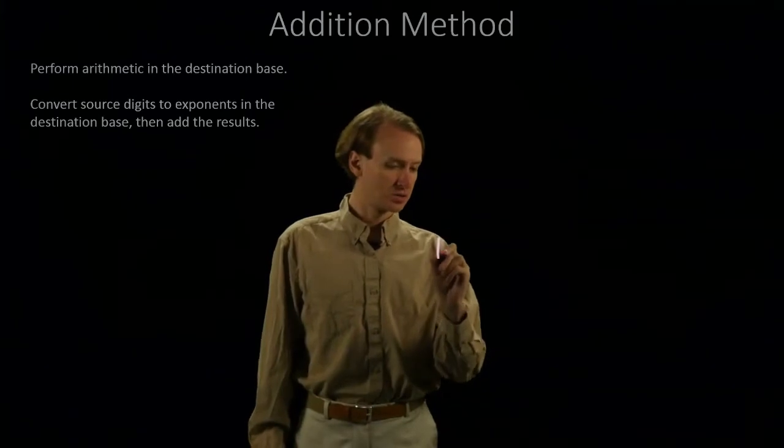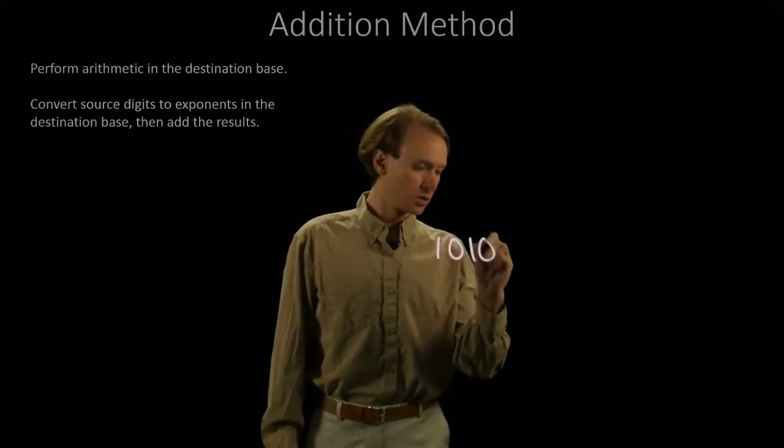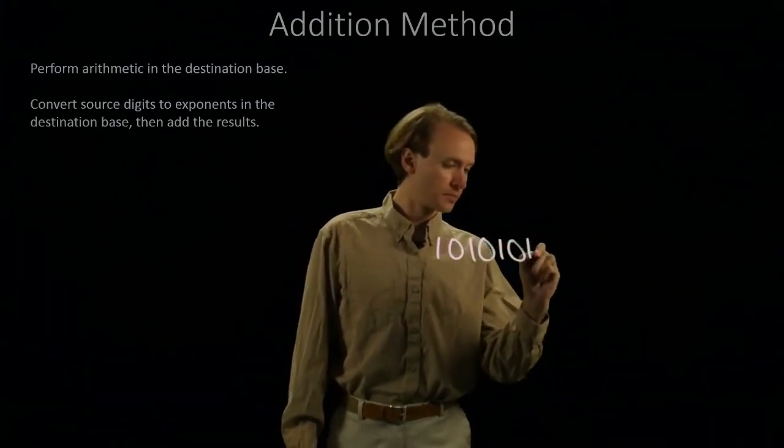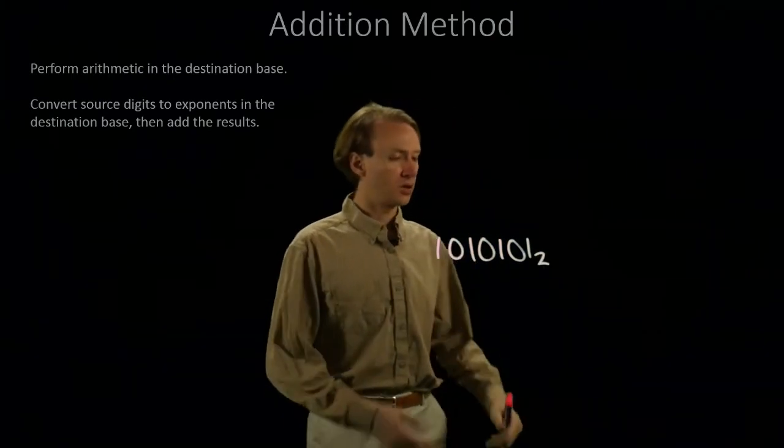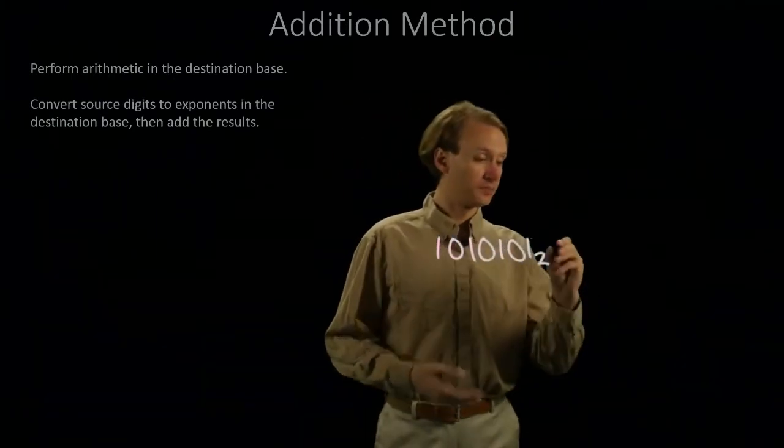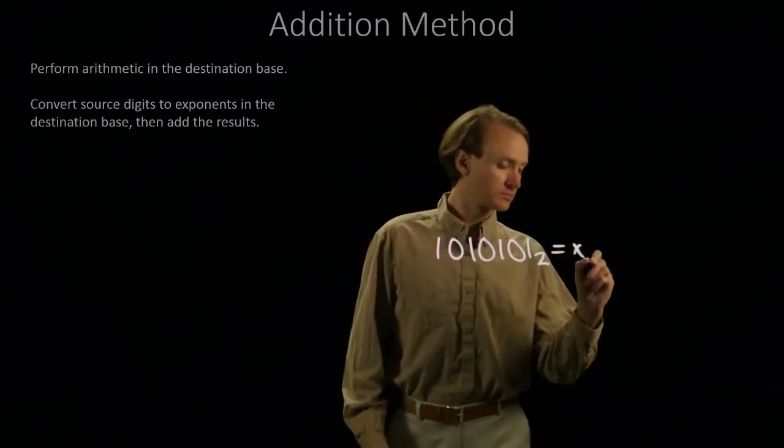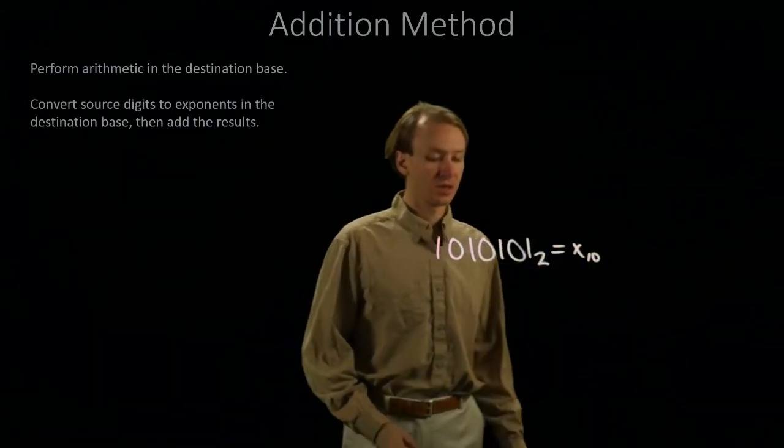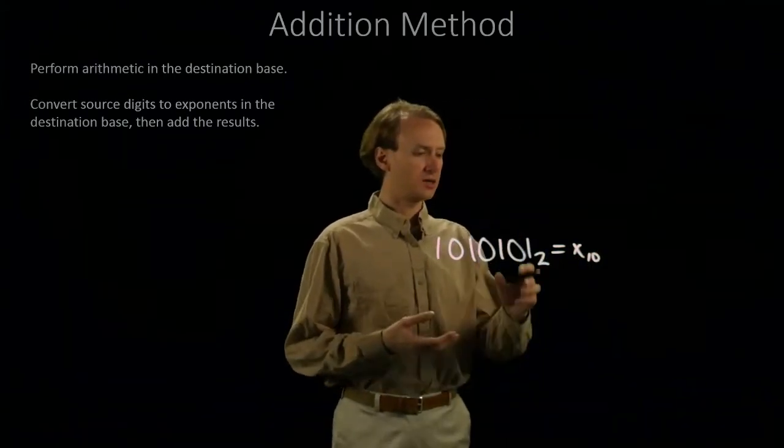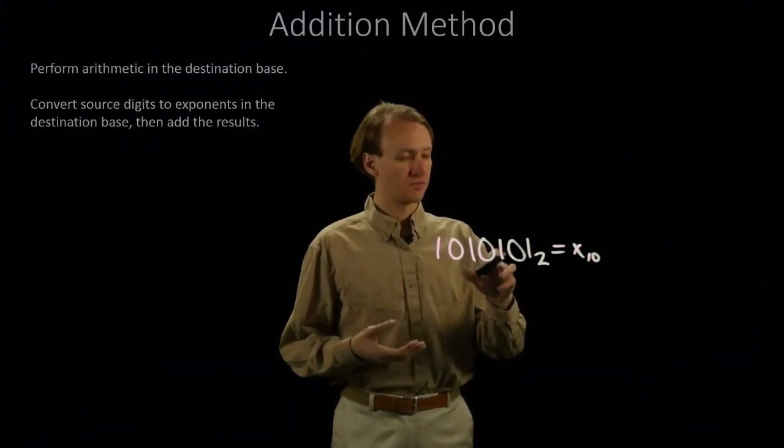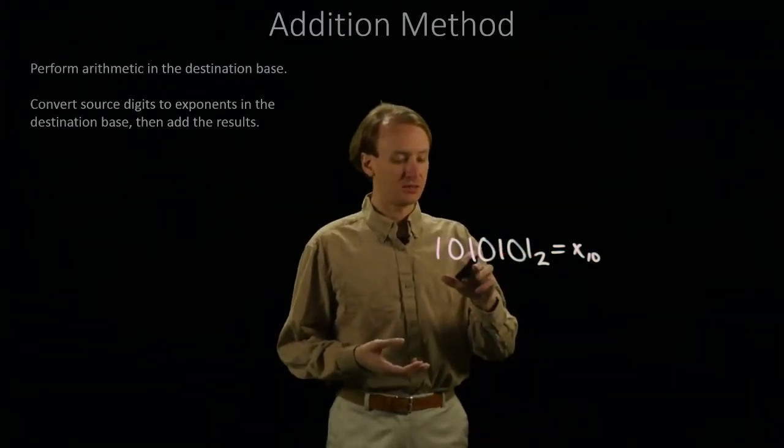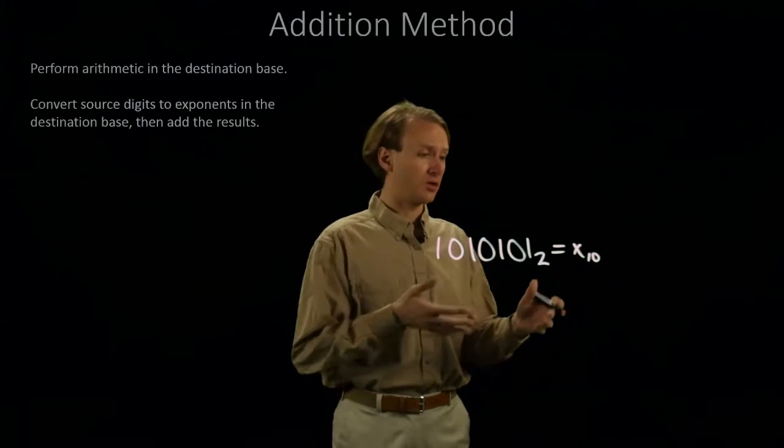So if I start with a binary number and I'd like to know what this number is in decimal. In this case I know that this is 1, 4, 16, 64. So I could just add all of those up.